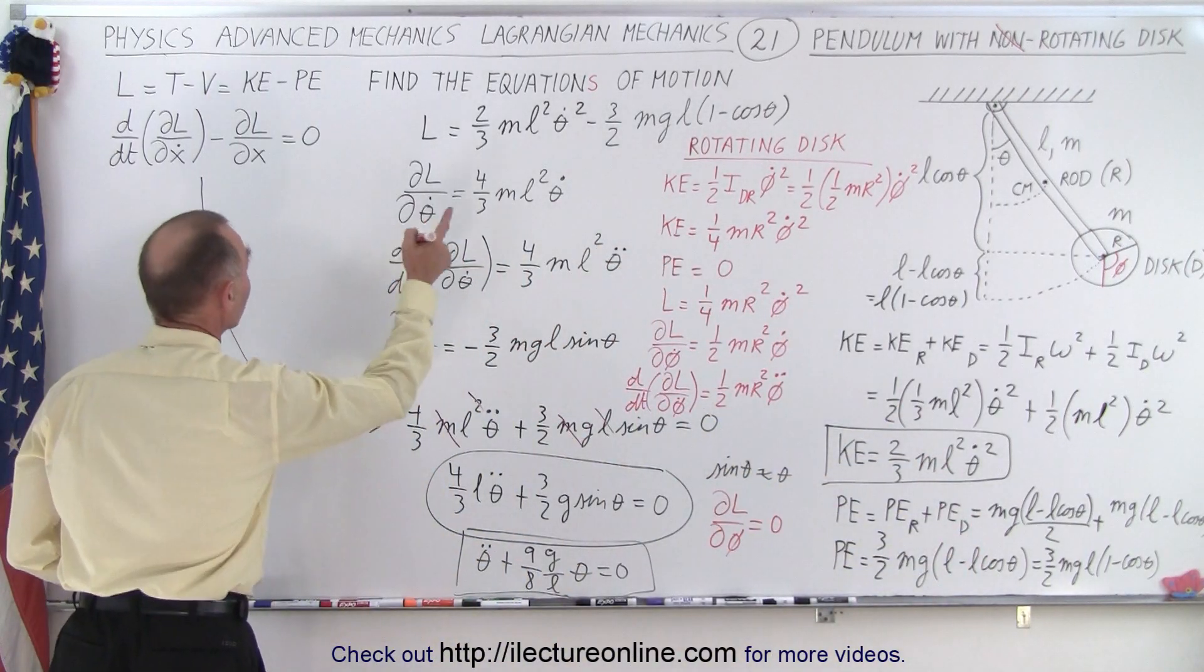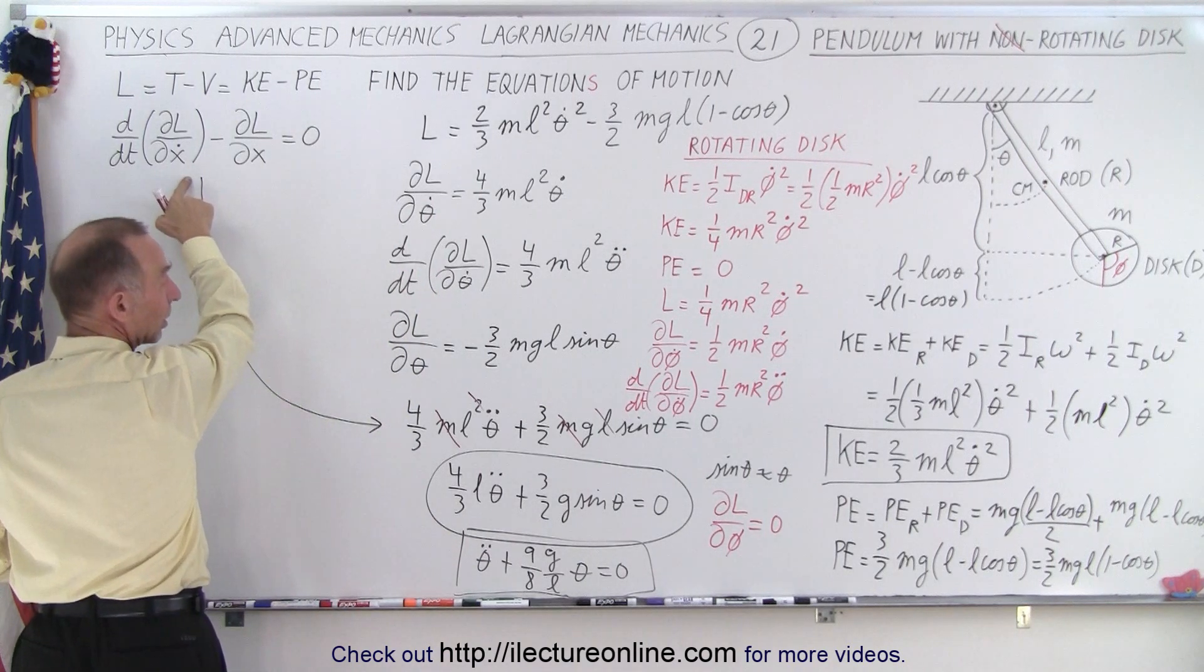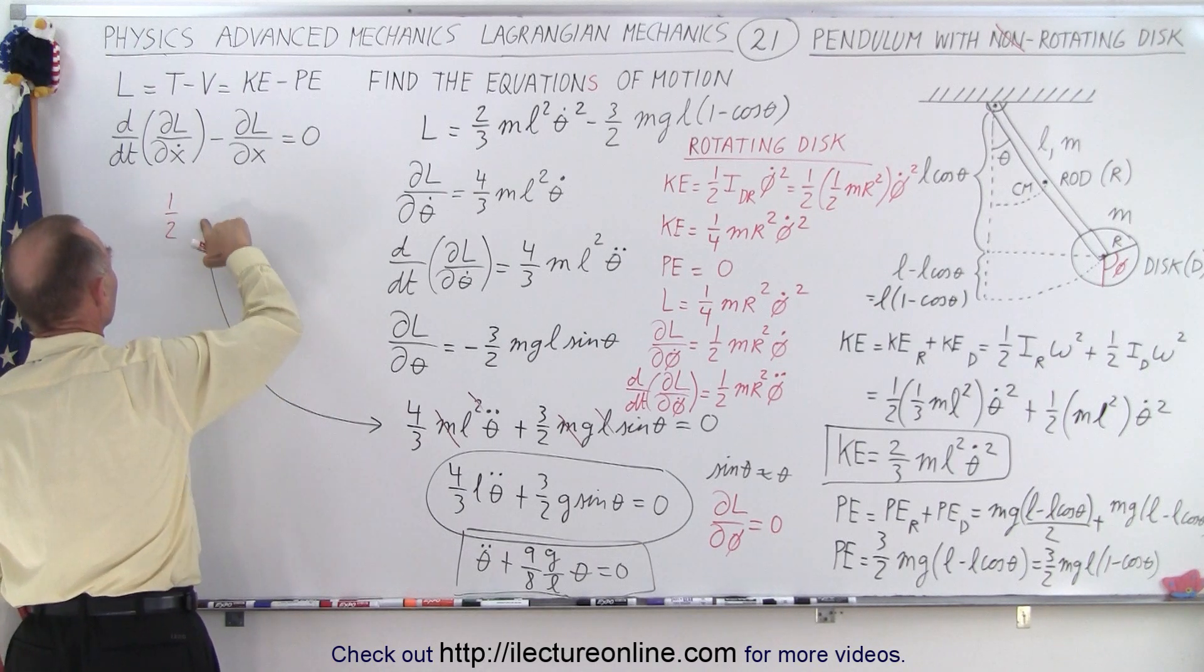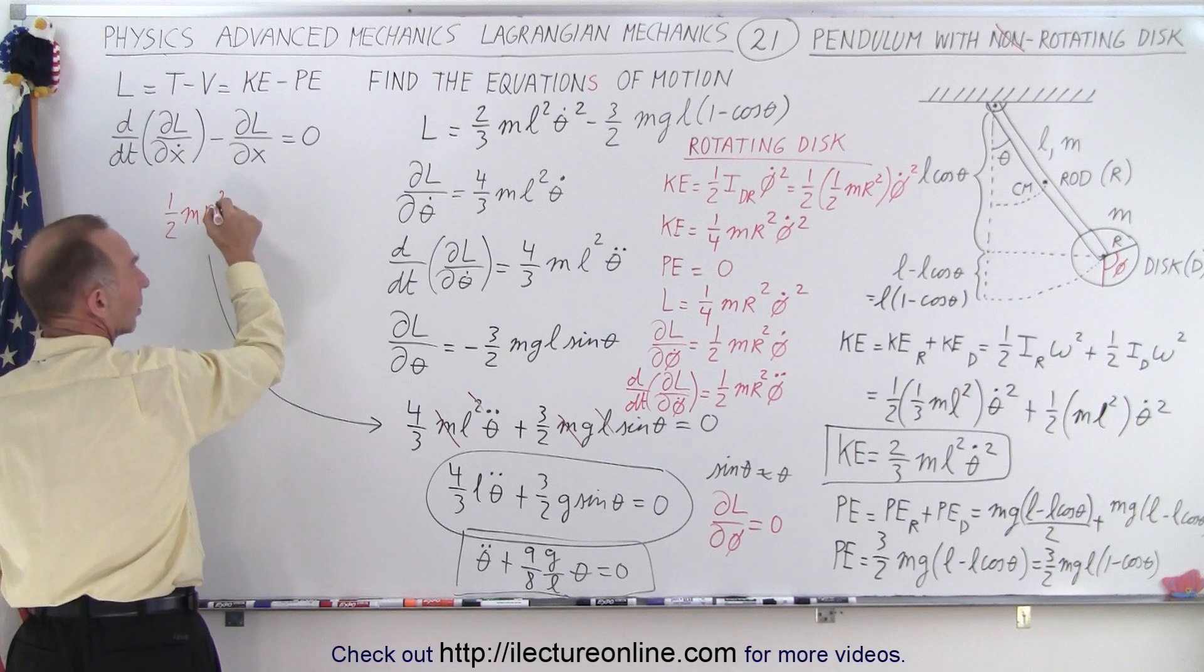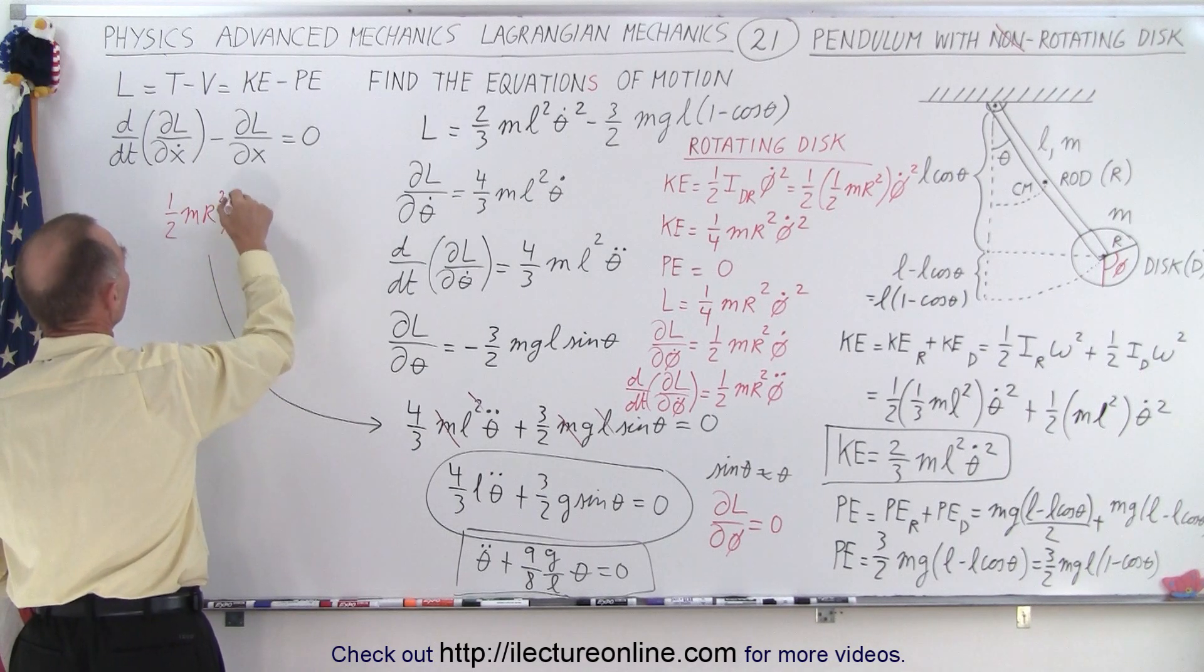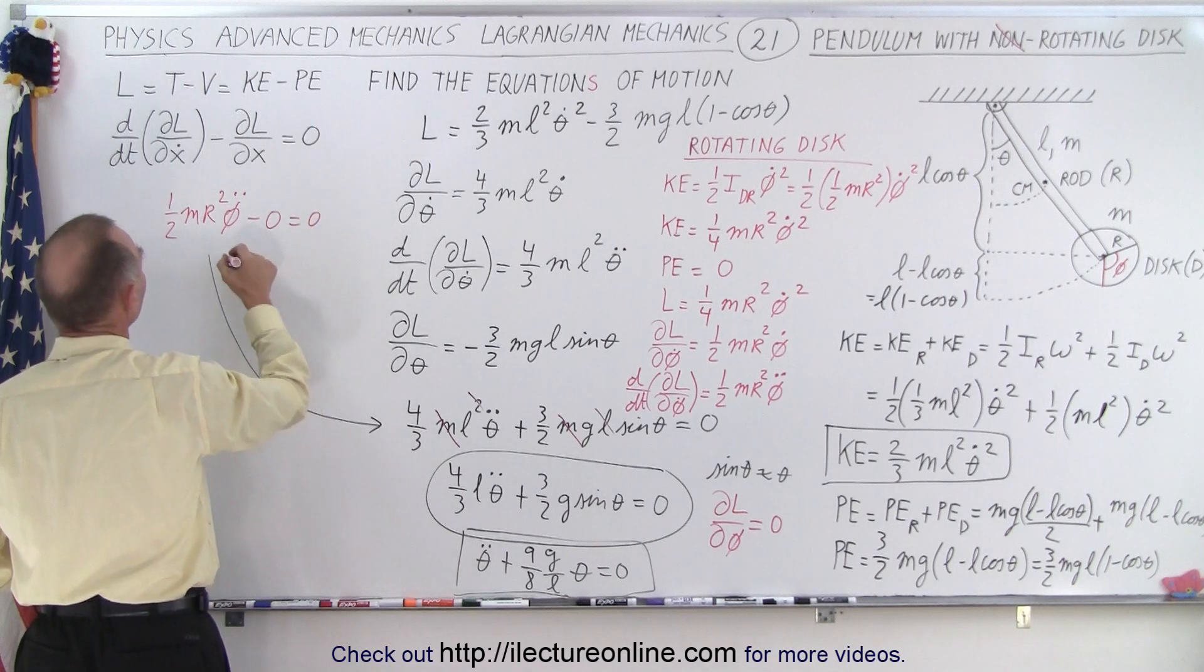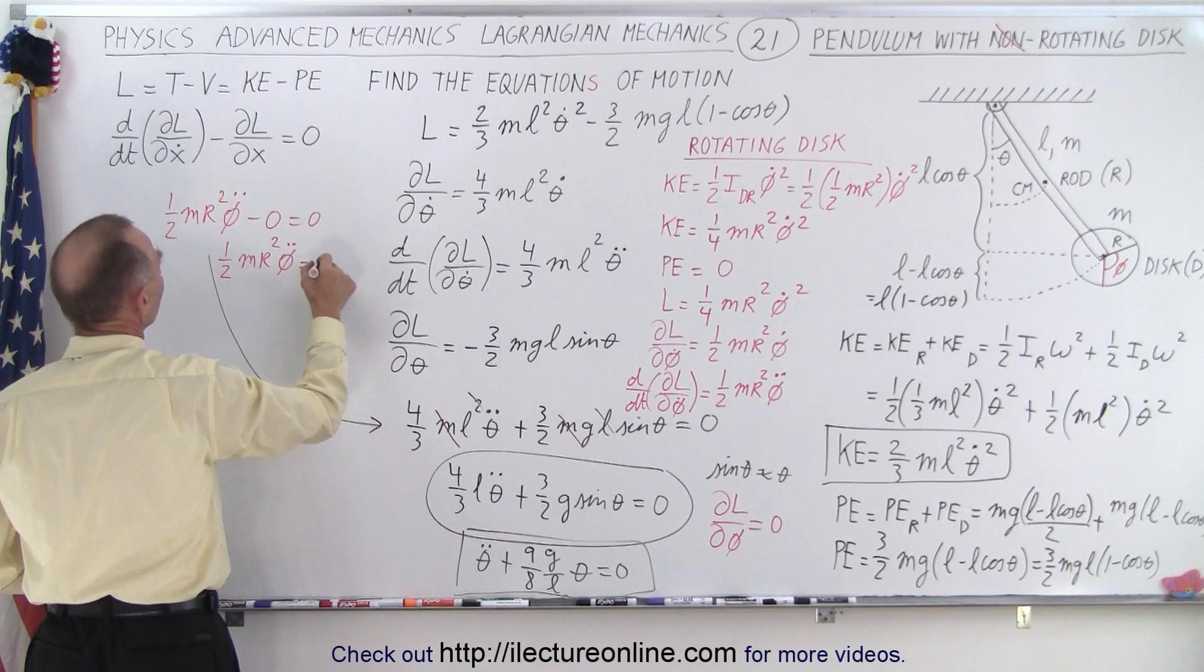And therefore, we can then say that the equation of motion, the second equation of motion is that this portion right here, which is equal to one half, and let me get rid of that here, one half m r squared phi double dot minus zero equals zero, or simply one half m r squared phi double dot is equal to zero.